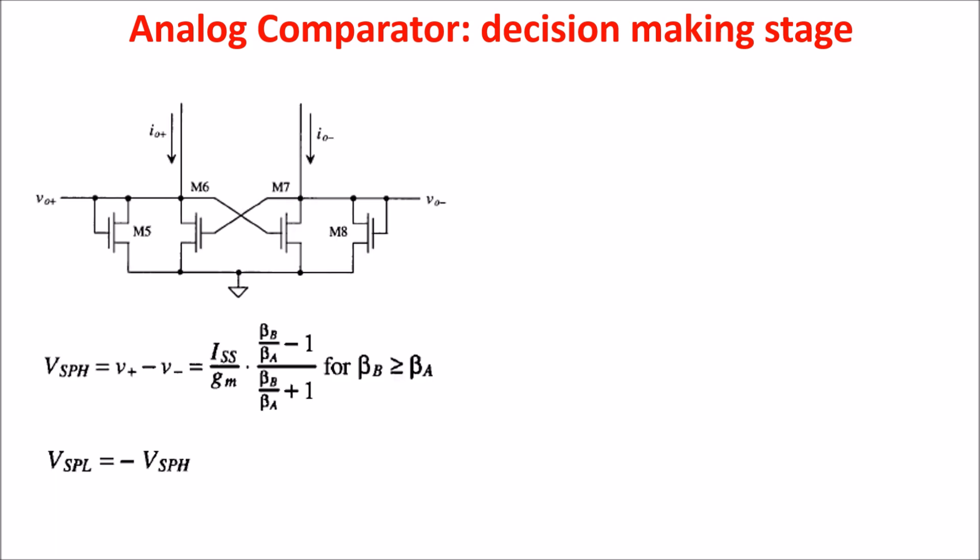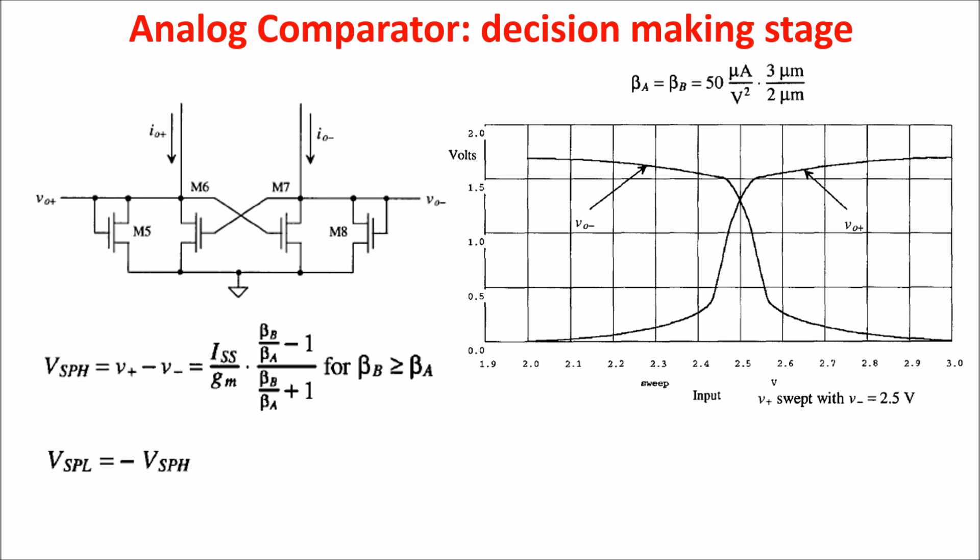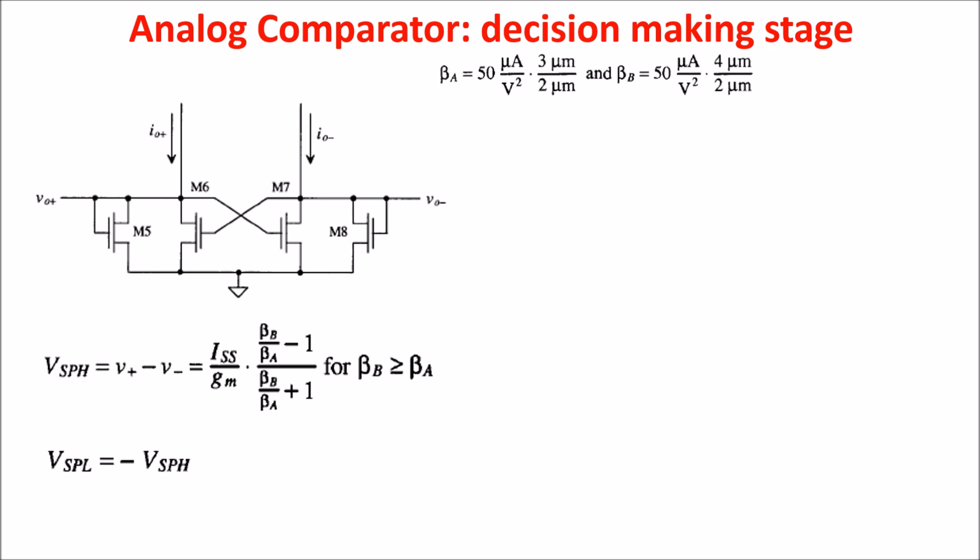For example, by setting beta A equals beta B equals this, and holding the V minus at 2.5 volts, and sweeping V plus from 2 to 3 volts, we get this behavior in which you see that the switching point is only 1 at 2.5 volts, when VO plus is equal to VO minus. If we make, for example, beta B large and beta A small, we create an hysteresis index example of 40 millivolts, and in this case, the switching occurs when V plus is above V minus of 40 millivolts.